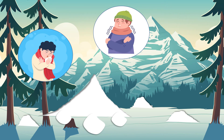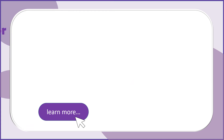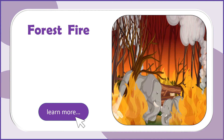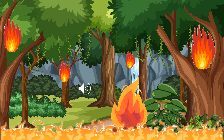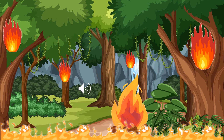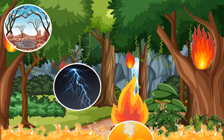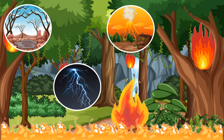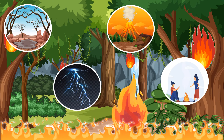Forest fire. A fire burning in an area of land with many trees that is difficult to control and sometimes spreads quickly. Natural causes of forest fires are dry climate, lightning, and volcanic eruption. It can also happen because of people who are not careful with their actions.